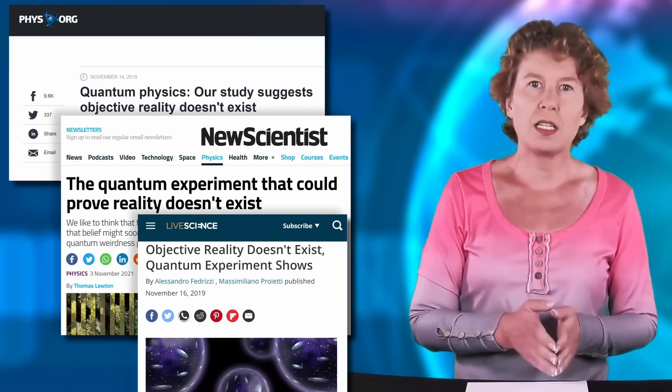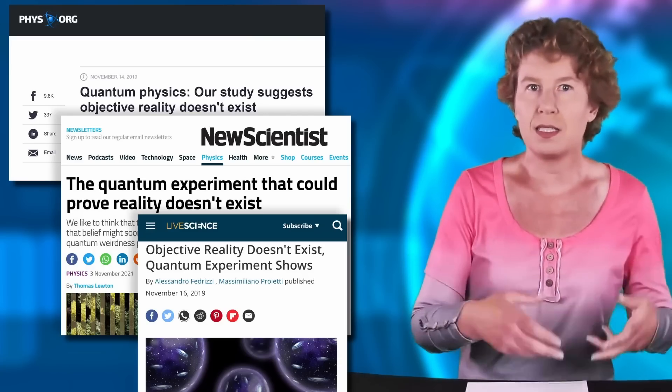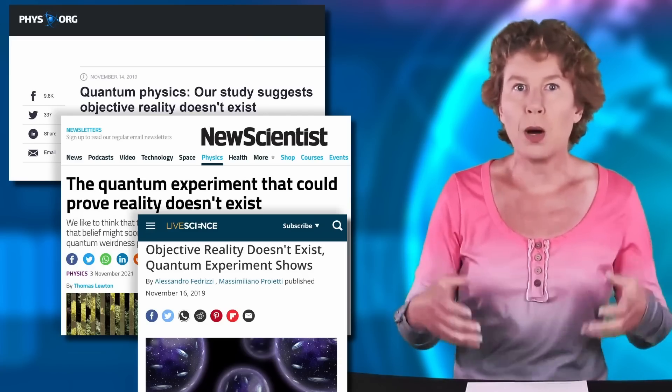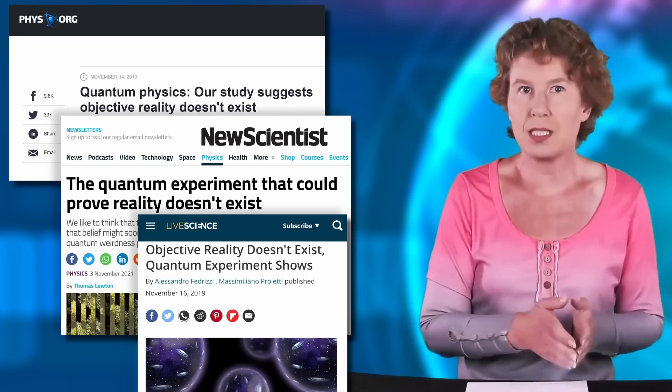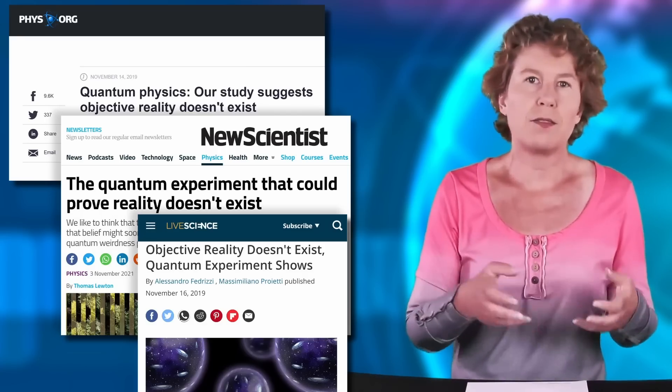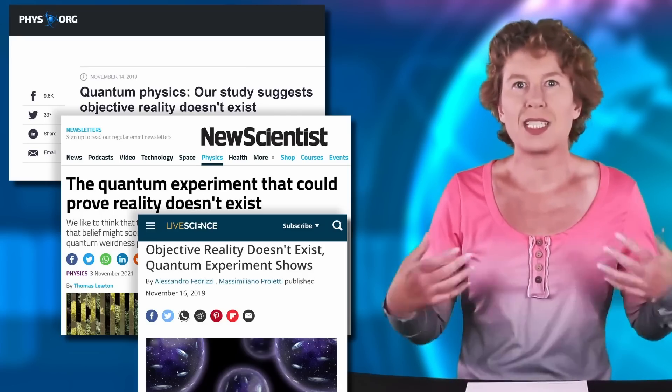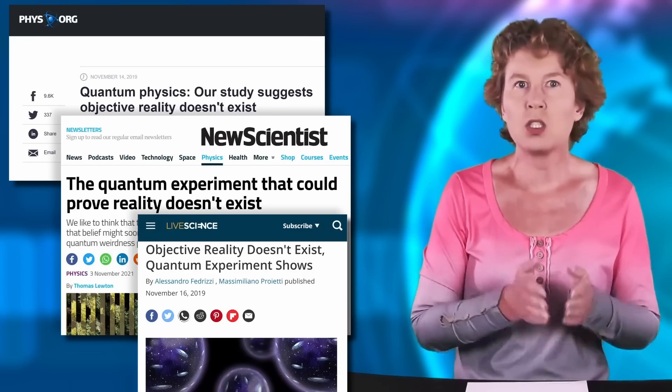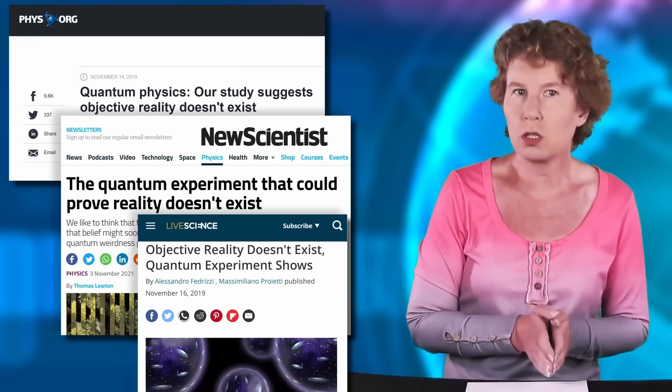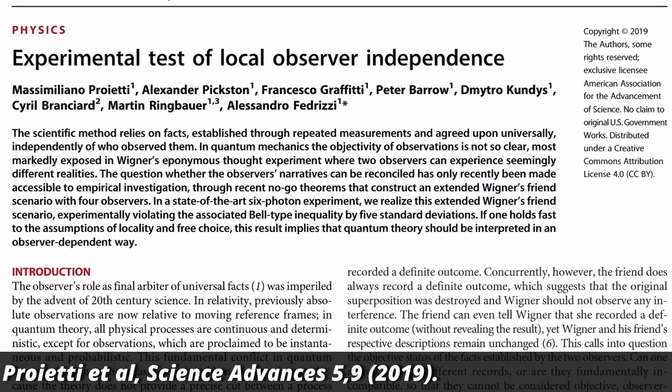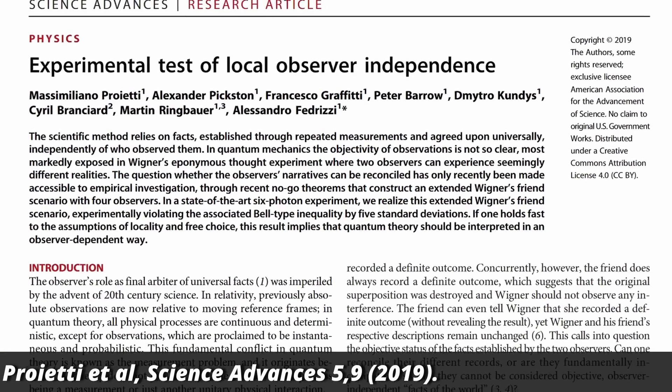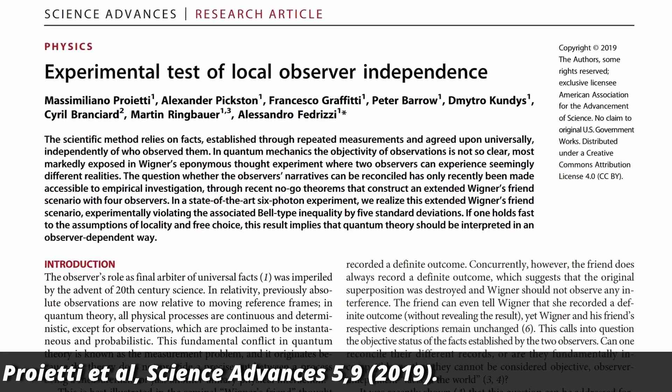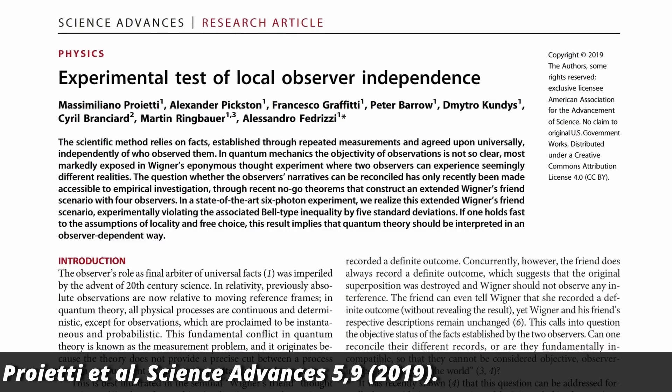And this is where the headlines come from that reality doesn't exist. Because if you buy that people can be in superpositions, then you have to conclude that there is no external world that's independent of us. It'd depend on where we are and who we talk to. In 2019, then, a group from Edinburgh made an experimental test that tested the predictions for this extended Wigner's friend scenario, except that they replaced the friends with photons.